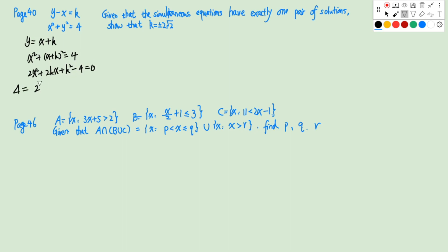So the discriminant is (2k)² - 4×2×(k²-4) = 0. This gives us 4k² - 8(k²-4) = 0, so 4k² - 8k² + 32 = 0, meaning k² = 8. Therefore k equals positive or negative 2√2.